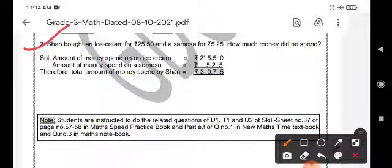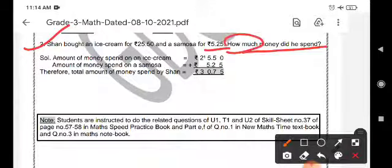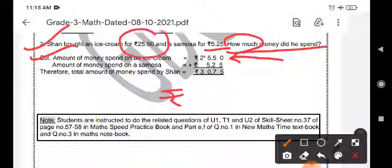Question number 2 is a word problem that says Sean bought an ice cream for 25.50 rupees and a samosa for 5.25 rupees. How much money did he spend? How much is a keyword for addition. So, you are going to write the statement: amount of money spent on ice cream is 25.50.